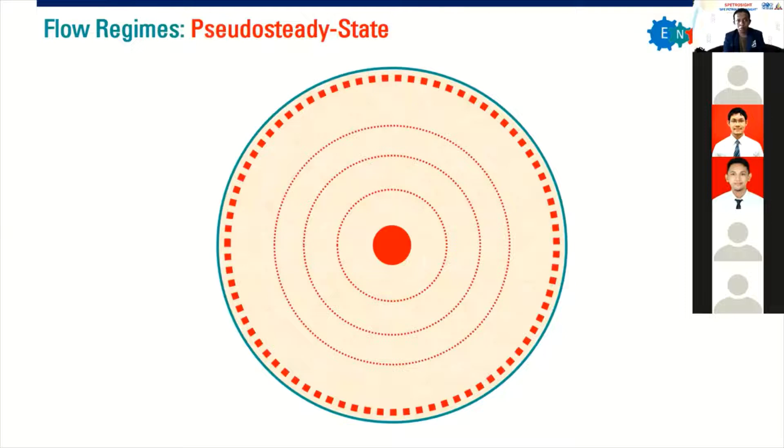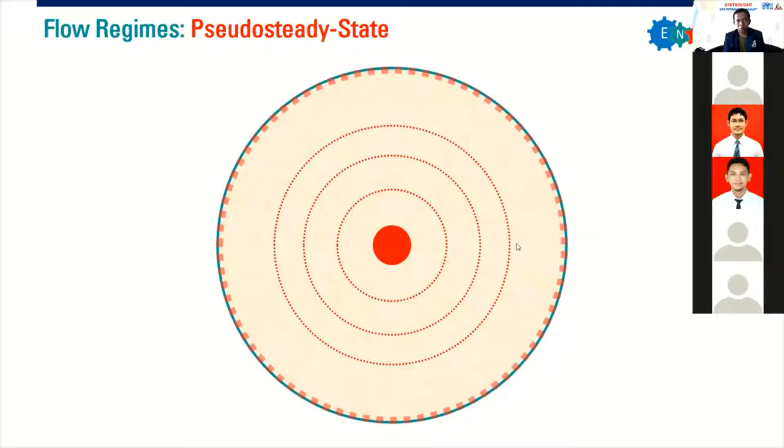It's the same thing if we produce the reservoir. It creates disturbance, it creates pressure waves which will propagate bigger and bigger like this one, until at one point it touches the boundaries. It hits the reservoir boundaries. At this condition, we can say that pseudo steady state flow regime is reached. We are now in a pseudo steady state regime.